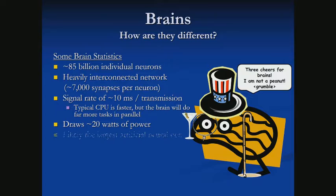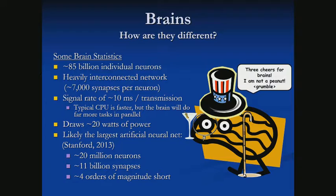We draw around 20 watts of power, which is very little. One of the largest artificial neural networks, at least back in 2013, was created at Stanford, and it had about 20 million neurons with 11 billion total synapses across those 20 million neurons.